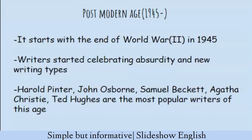After the Modern Age we enter the Post-Modern period of English literature, which is the last division of our literary history. The Post-Modern period starts in 1945 with the end of the Second World War and continues till now. This is the time when writers started celebrating absurdity and disorder in literature instead of giving reasons and logic. England lost its power and America became the economic superpower. John Osborne, Samuel Beckett, Harold Pinter, Ted Hughes, and Agatha Christie were the writers of this age.